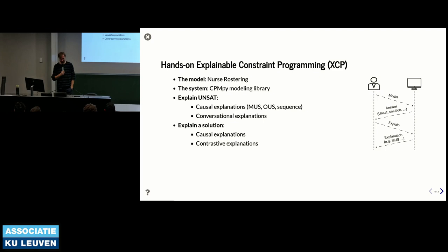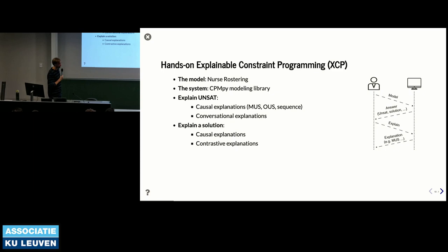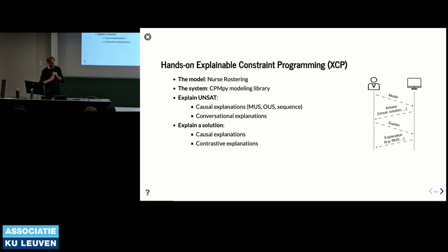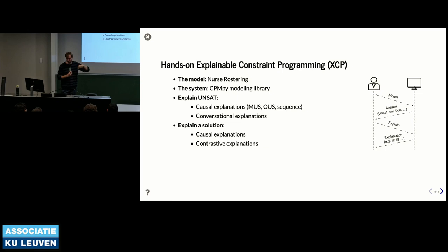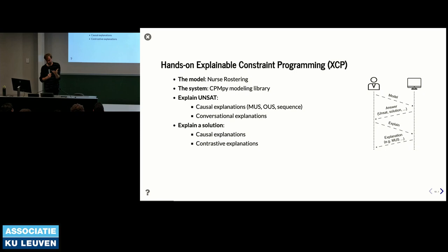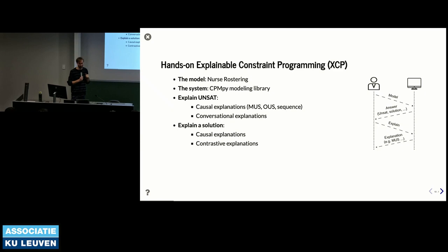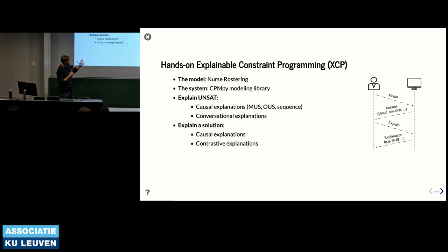For the rest of the tutorial, we start with the running example—a nurse rostering problem—then say more about the system on which these explanation techniques are implemented. We grouped the rest in two parts: one focusing on explaining unsatisfiable models, covering causal and conversational explanations; and a second part where the system returns a solution and we look at causal and contrastive explanations.